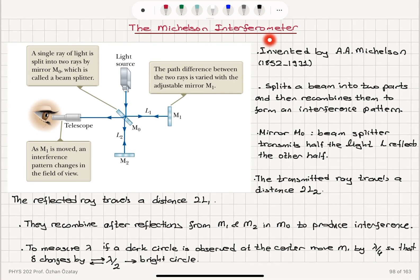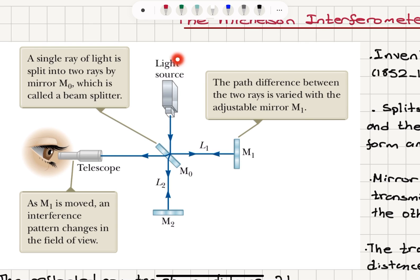The Michelson interferometer. This is a device invented by Michelson, 1852-1931, as a method to measure the wavelength of light.